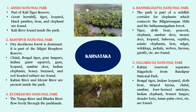The Kudremukh National Park has the Tunga River and Bhadra River passing through the park lands. Bannerghatta National Park is part of a wildlife corridor for elephants, connecting the Biligirirangan Hills and the Sathyamangalam Forest, and has a very rich diversity of faunal species. In Nagarhole National Park, the Kabini Reservoir is present, which separates Nagarhole from Bandipur National Park.